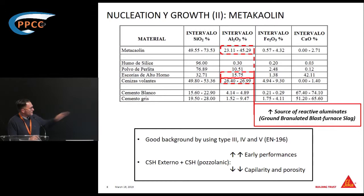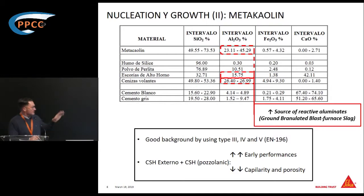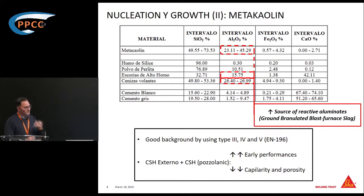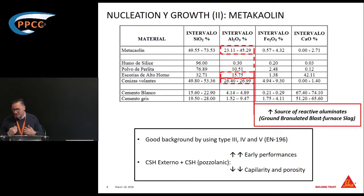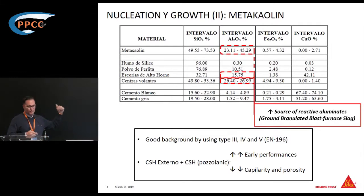With good background in type 3, 4, 5, and 7 mix design formulations, what we achieve by using metakaolin is an extremely good contribution in terms of refining the pore system and pore size distribution, and also very good early performance. The main drawback of slag is that it doesn't contribute easily in the short term. Fly ash doesn't have this issue, but slag — which I consider best practice — doesn't perform so well at early ages.